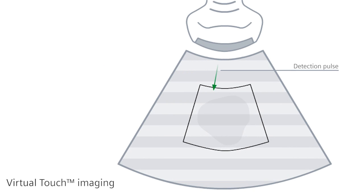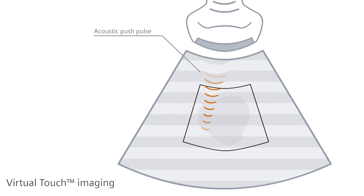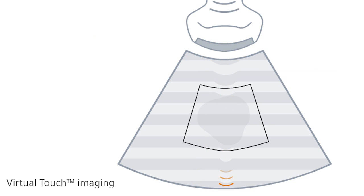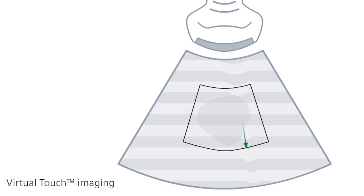The second form of elastography is virtual touch imaging, which electronically compresses the tissue by using a transducer with the help of a strong sound impulse. Due to the different stiffness of tissue, it will be displayed either in black and white or in color.